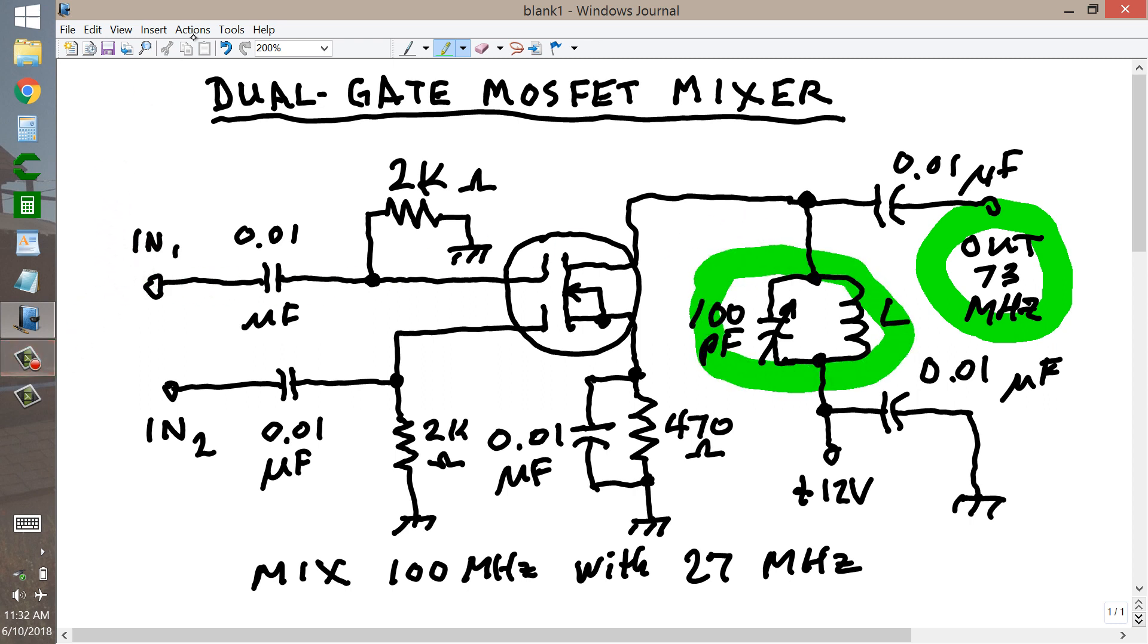to produce an output of 73 MHz. You would tune this circuit to 73 MHz. Your input 1, let's just say that's the 100 MHz signal, and let's say input 2 is the 27 MHz signal. That is an excellent circuit for use at frequencies of this sort, on this order of 100 MHz and 27 MHz. 100 MHz is in the VHF range, and 27 MHz is near the top of the HF range,